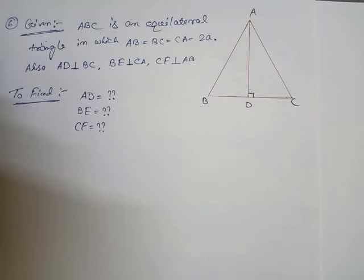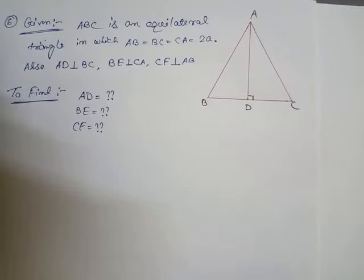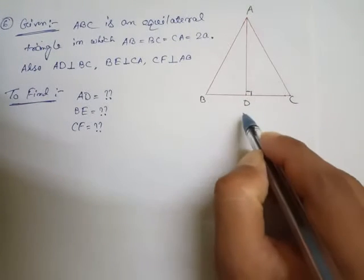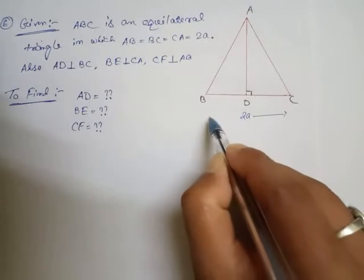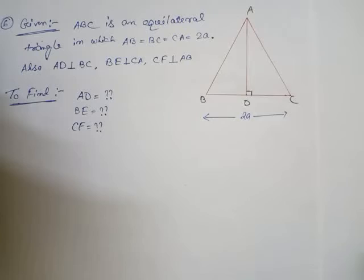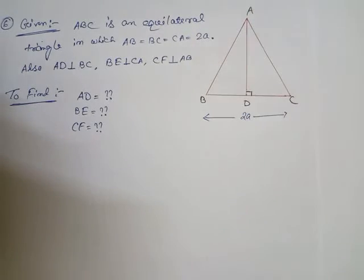As you can see in the video, this is a diagram of the given triangle ABC. Remember that this triangle is an equilateral triangle, which means all sides are equal. The sides are given as 2a, so we write 2a for all three sides: AB = 2a, BC = 2a, CA = 2a. In an equilateral triangle, all sides are equal and all angles are also equal.